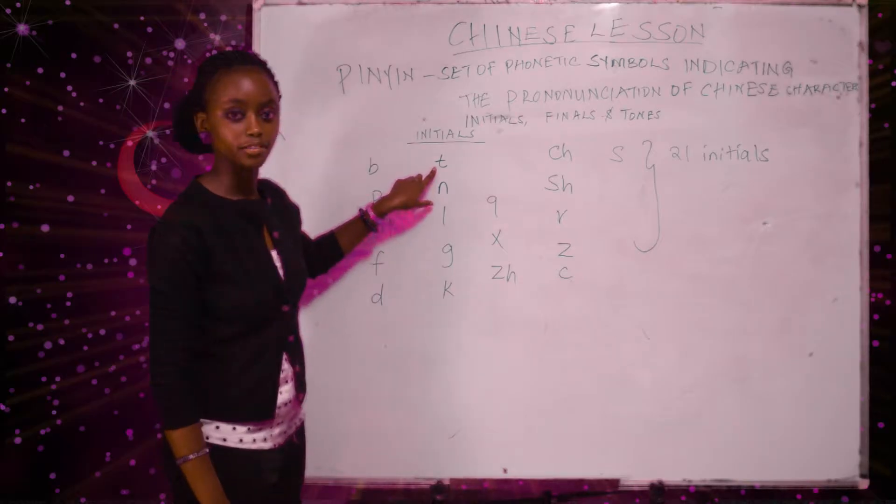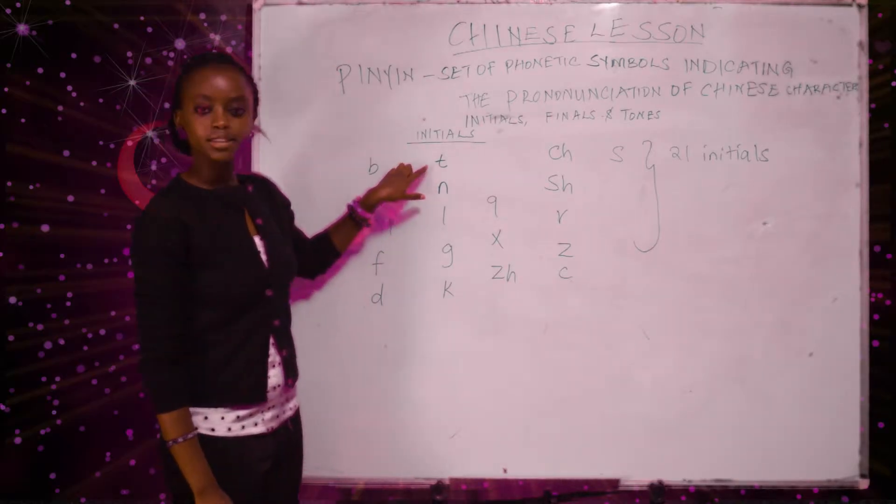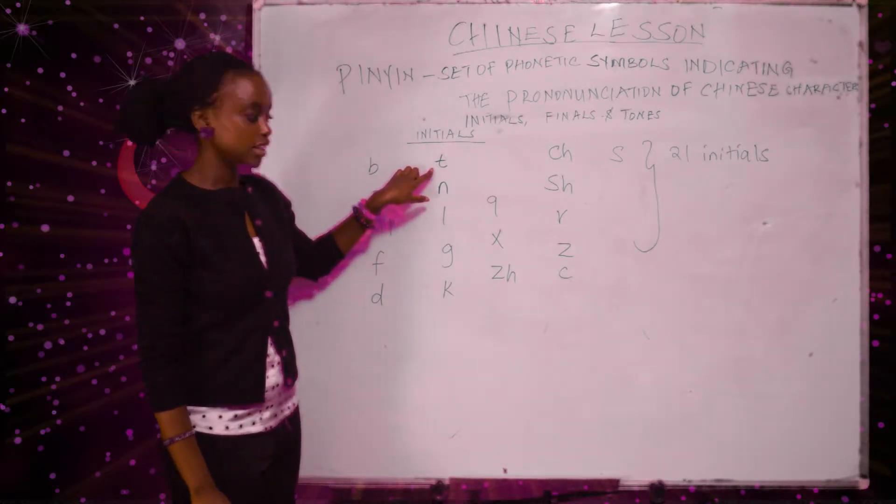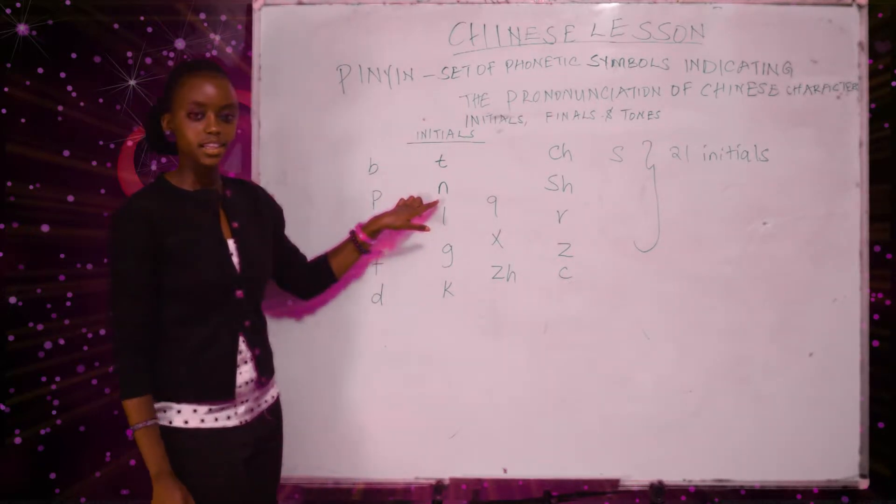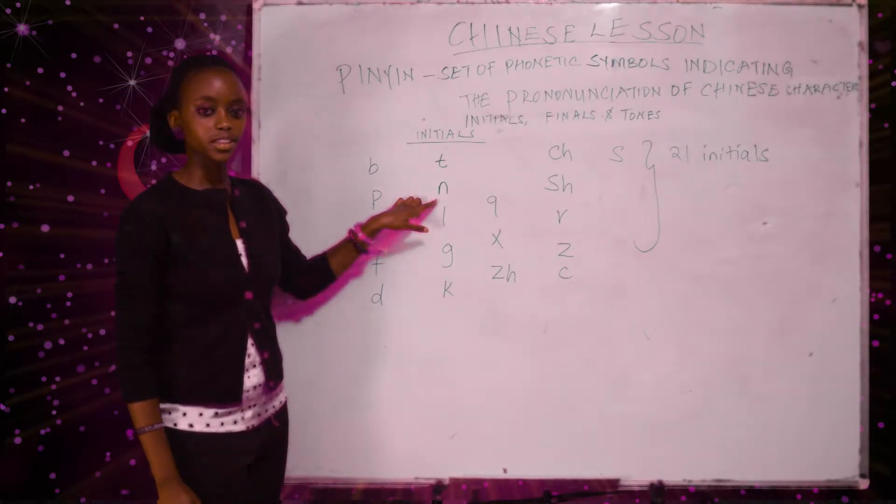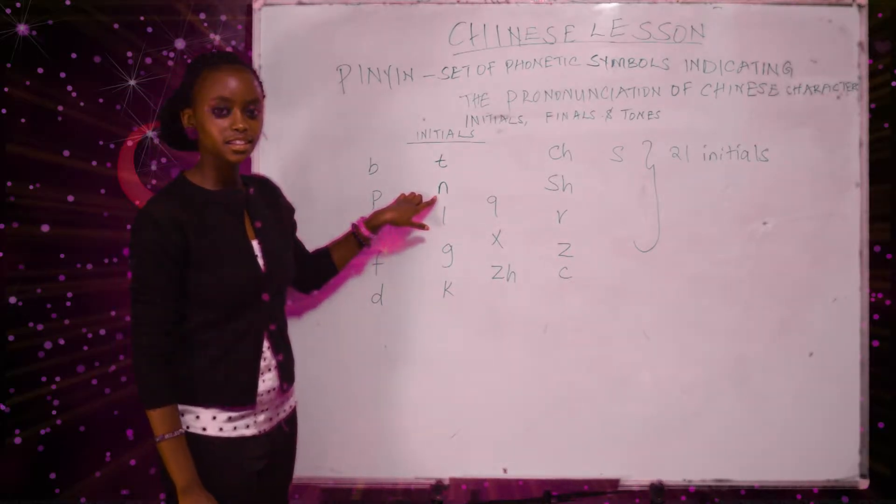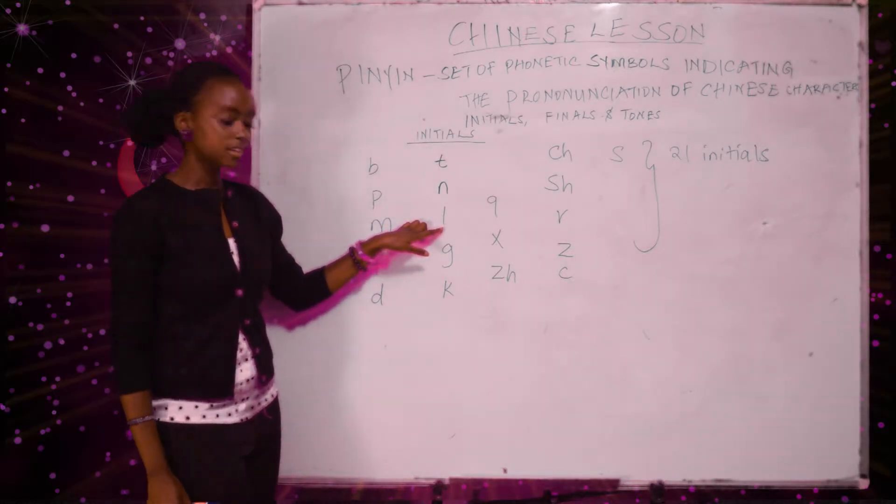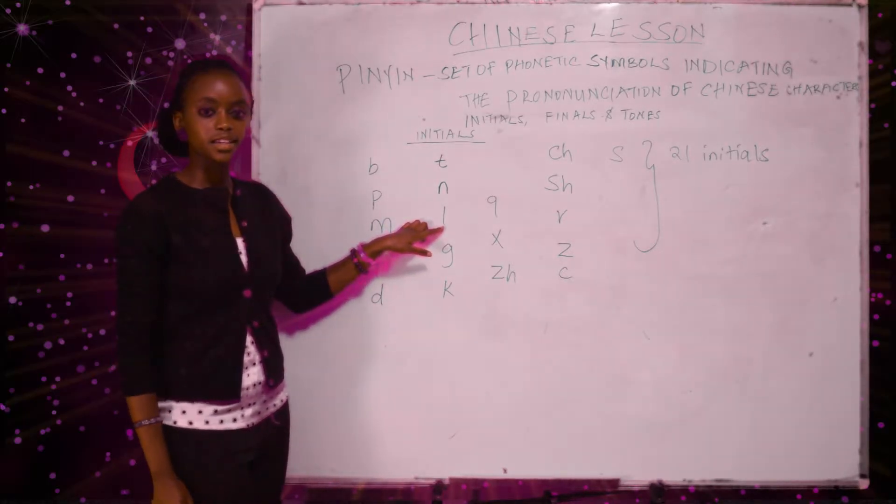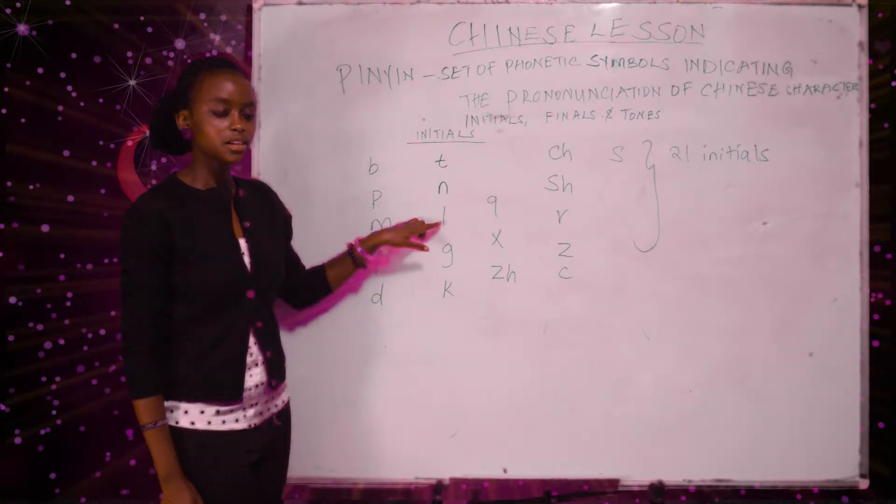The next one is T. The next one is N. You pronounce it as nuh, nuh. The next one is the L. You pronounce it as luh, luh.